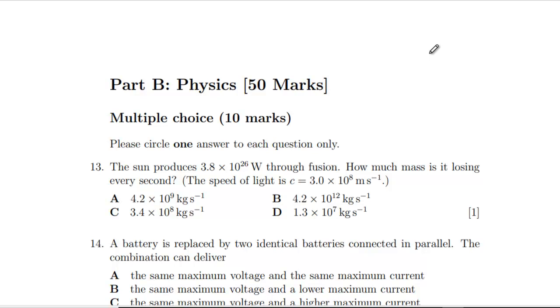Hello, here's the second part of the 2009 PAT. We're kicking off the physics section with these multiple choice questions. I'll just run through these in this video. Question 13: The sun produces 3.8 times 10 to the 26 watts through fusion. How much mass is it losing every second? We've got E equals mc squared.